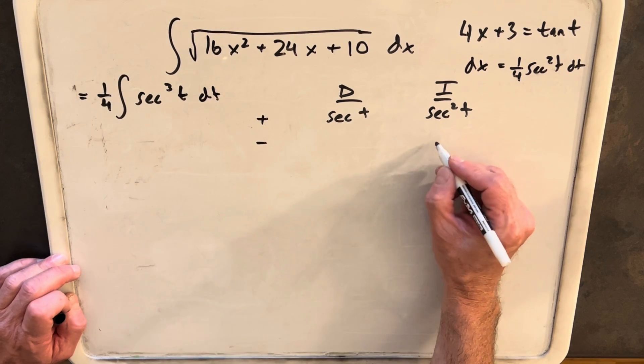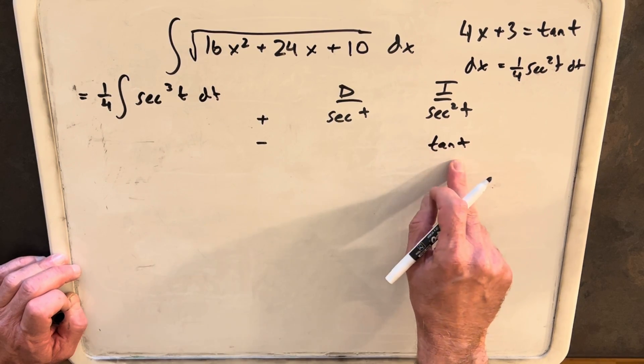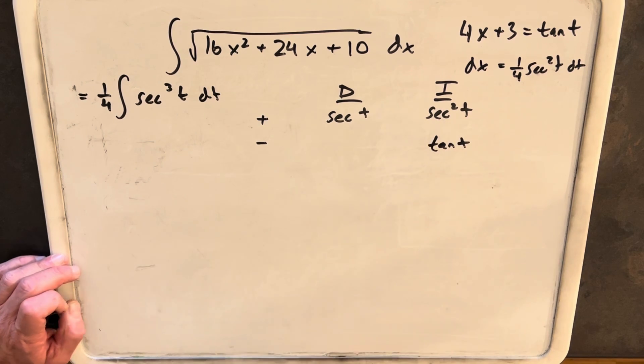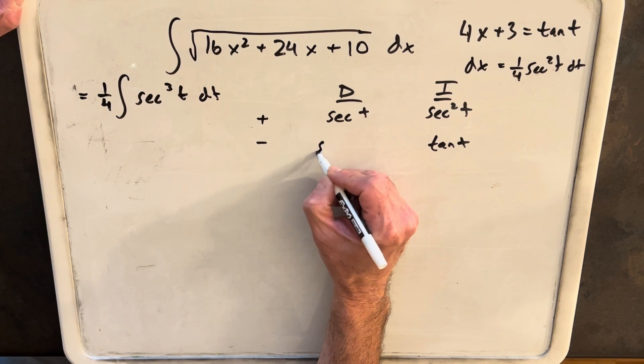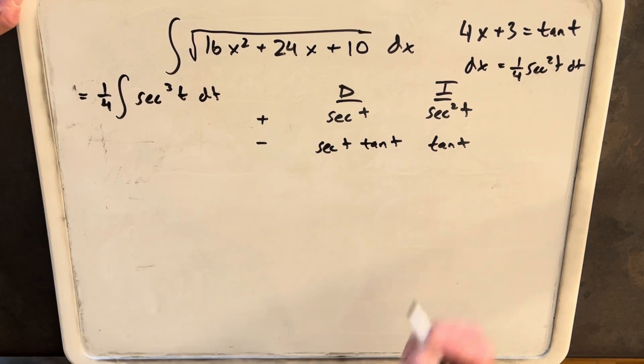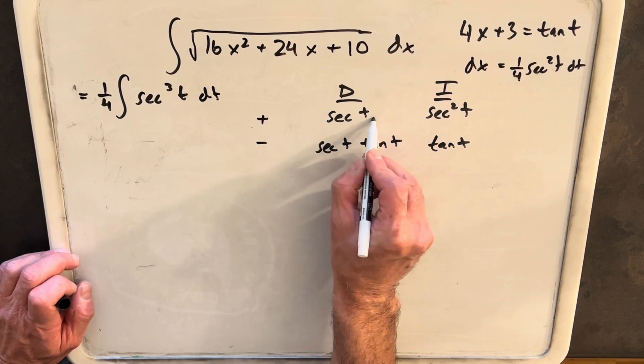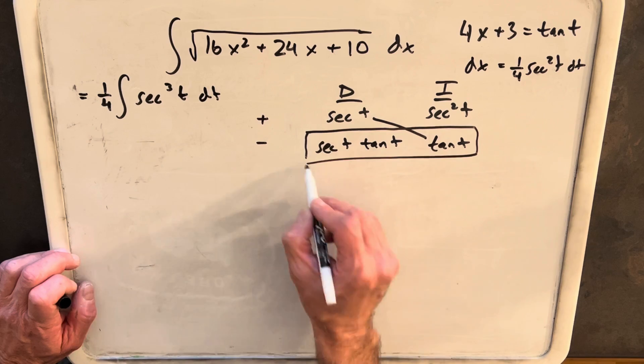Doing that, the integral of secant squared t is just tan of t. Just kind of a common derivative of tan of t is secant squared. Then the derivative of secant is going to be secant t tan t. Then when we write this, this is going to be part of the solution, and then this part is going to be another integral.